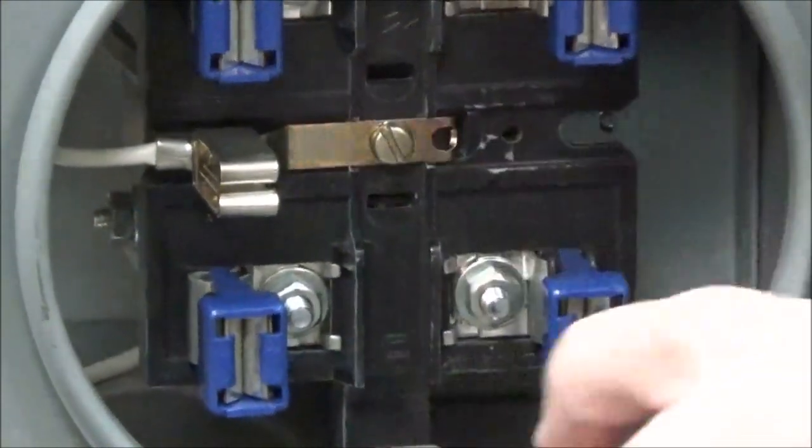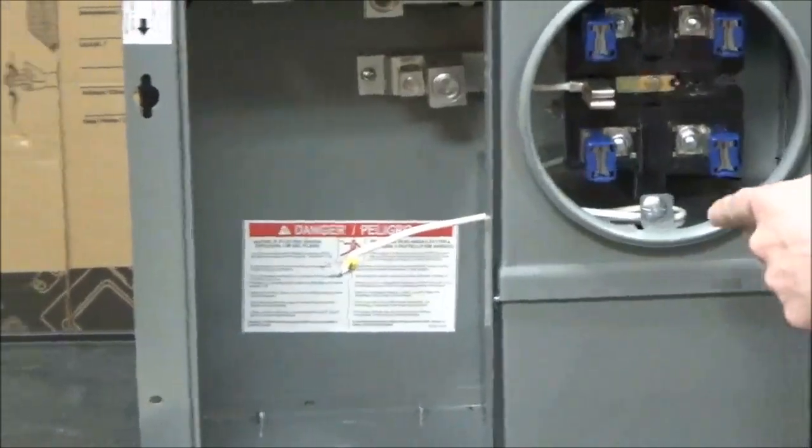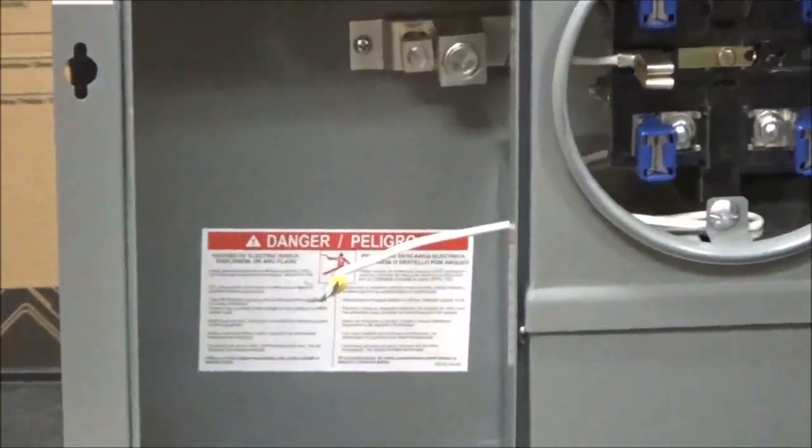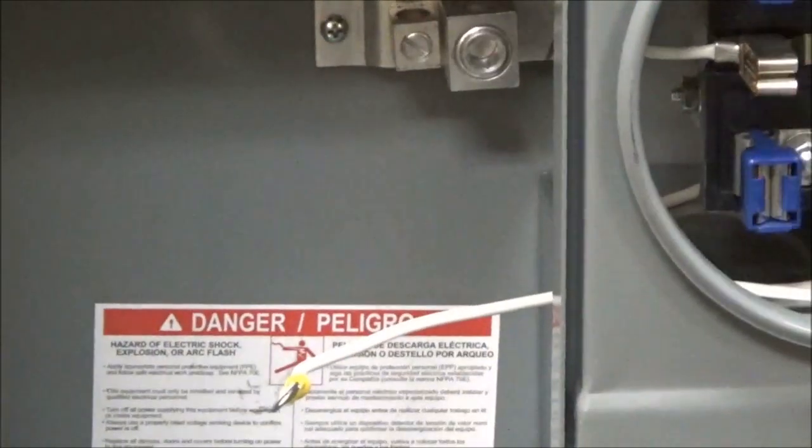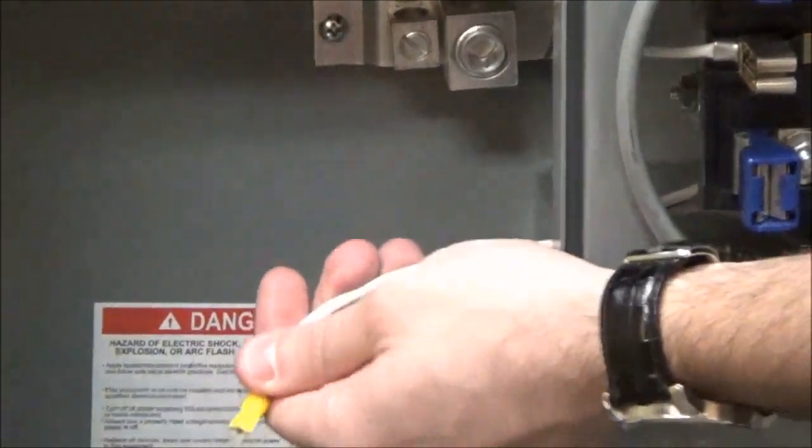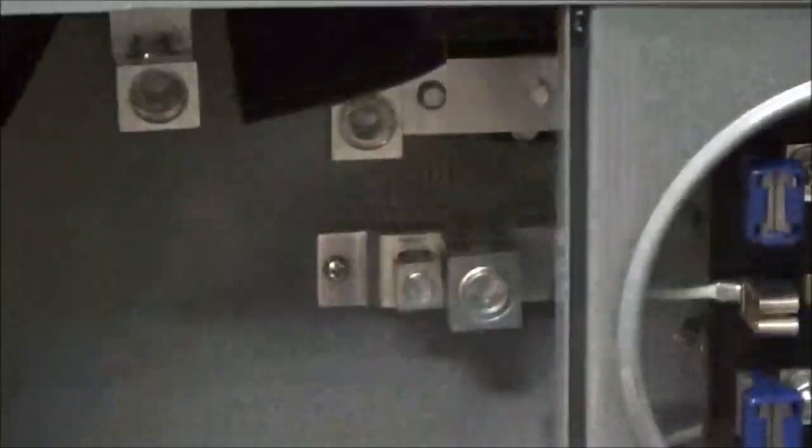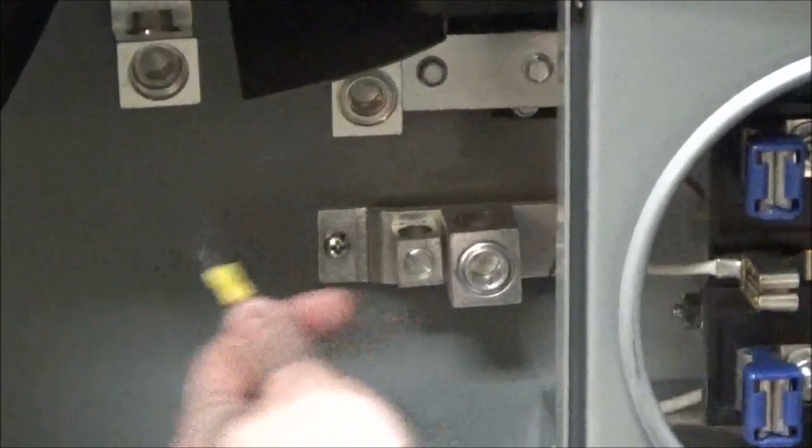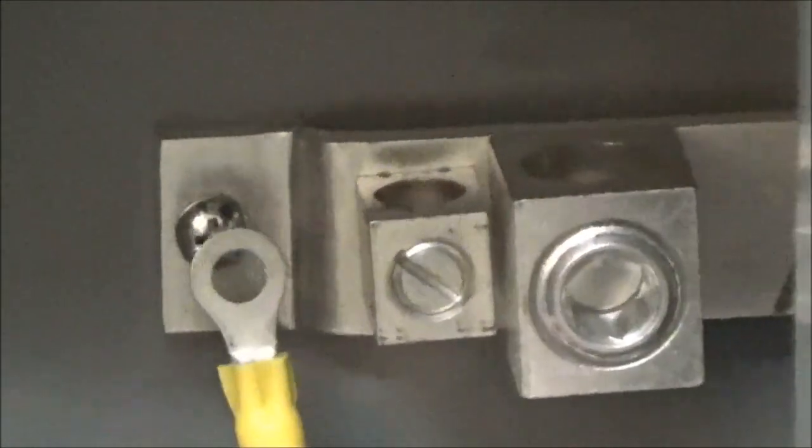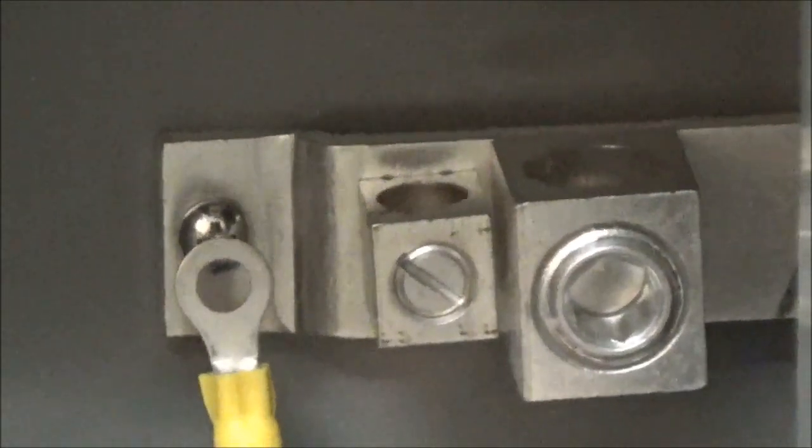Next, you want to install the neutral wire by first routing it so it does not interfere with the meter socket. Then, take the terminal on the end of the neutral wire and install it underneath the main neutral mounting screw.